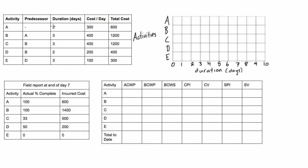Activity A has a duration of two days, so we'll draw it in just like that. Activity B's predecessor is A and it's three days long, so it will start here and go three days out. Activity C depends on B and it's three days. Activity D also depends on B and it's two days long. Activity E depends on D and it's three days long.